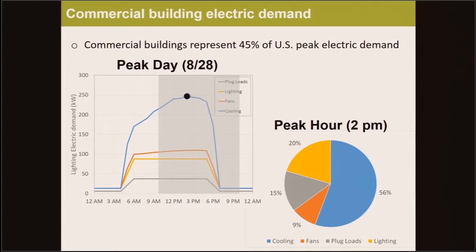On the left, we see a plot of the electric demand by end use on the peak day, which in this example is August 28th. It's very hot out and the sun is out as well. The plug loads and lighting demand pick up when people arrive in the morning, then the HVAC end uses ramp up as the day gets hotter and decline in the evening. On the right, we can see that at the peak hour of 2 p.m., nearly two-thirds of this demand is from HVAC, namely cooling and fans. However, one-fifth of the peak demand is from lighting. This breakdown would vary significantly by climate and building type, but lighting is a sizable component of peak demand.